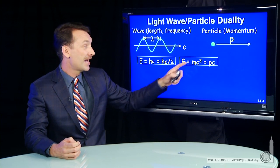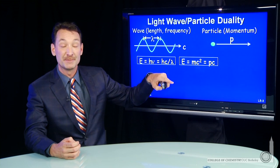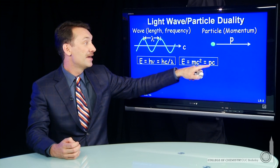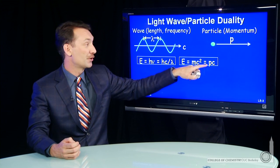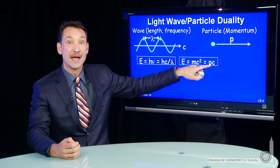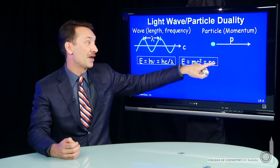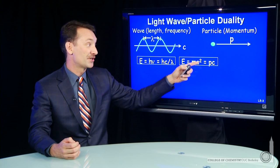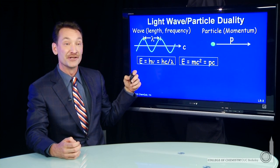Mass times velocity, mass times the speed of light c in this case for a photon, can be written as the momentum times c. So the momentum is m times c times another c, gives you mc squared. So these expressions for the energy are equivalent.